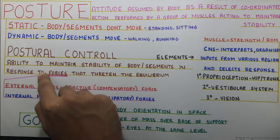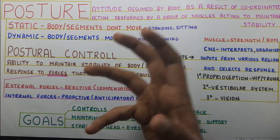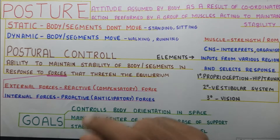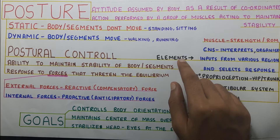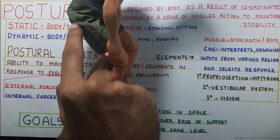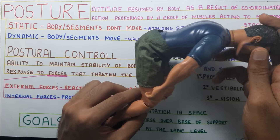Postural control is very similar to balance — it is the ability to maintain the line of gravity or center of gravity within the base of support. Postural control has a few elements, very similar to elements of balance. The first is muscle strength and range of motion. You need muscle strength — posterior muscles need to activate to maintain a squat position — and you also need enough range of motion at the knee to maintain a stable position.